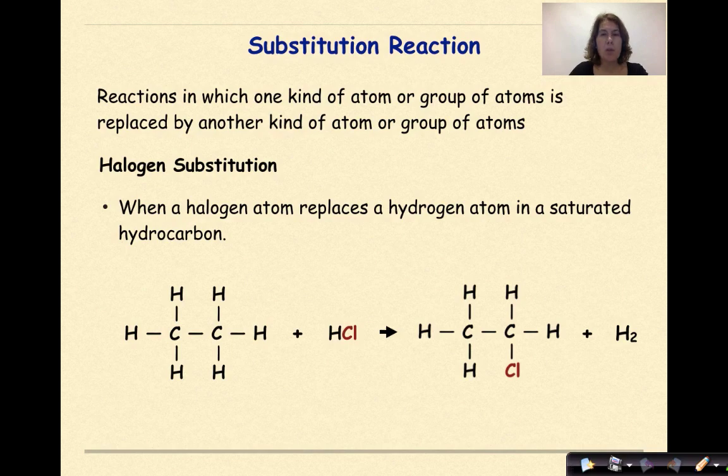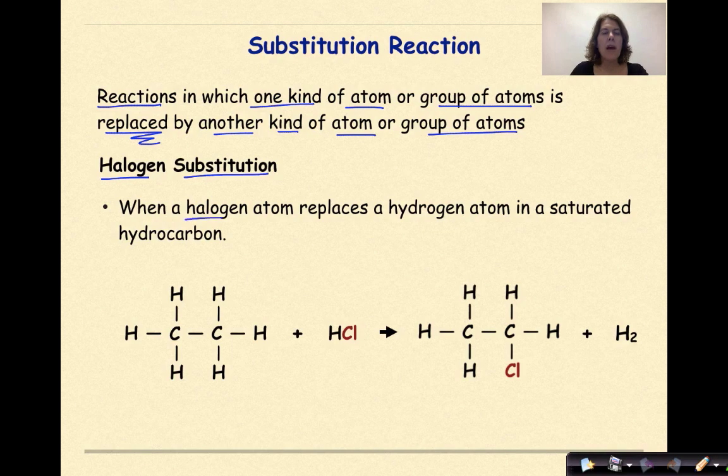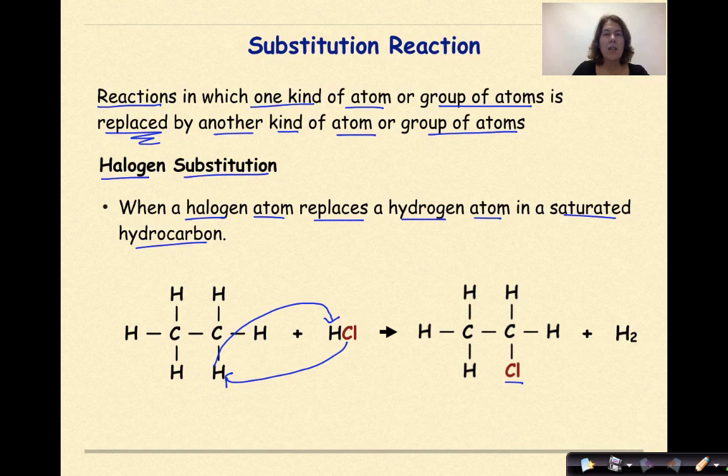Now let's talk about substitution reactions. Reactions in which one kind of atom or group of atoms is replaced by another kind of atom or group of atoms. One type is halogen substitution, when a halogen atom replaces a hydrogen atom in a saturated hydrocarbon. The key thing to notice is that we're working with saturated hydrocarbons, meaning all carbon-to-carbon bonds are single bonds. In this case, we have ethane coming together with HCl. Notice as a product, we have the Cl replacing one of the hydrogens in the original ethane. This Cl comes in, kicks out that hydrogen, that hydrogen hooks up with this hydrogen, and as a result, we form H2. This is a substitution reaction.